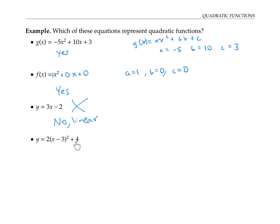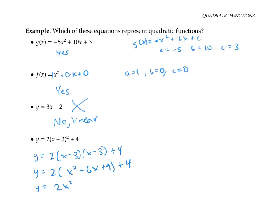The fourth function might not immediately look like a quadratic. But if we rewrite it by expanding out (x−3)², we get y = 2(x−3)(x−3) + 4, which is 2(x² − 6x + 9) + 4. In other words, it's 2x² − 12x + 18 + 4, which is now starting to look like the standard quadratic form. Here a would be two, b would be negative 12, and c is 22. So this is also a quadratic function.